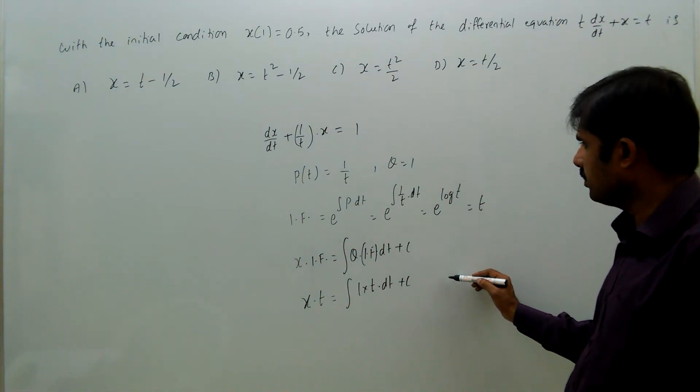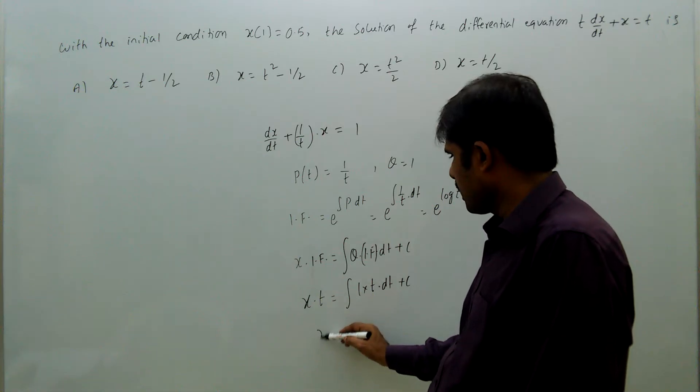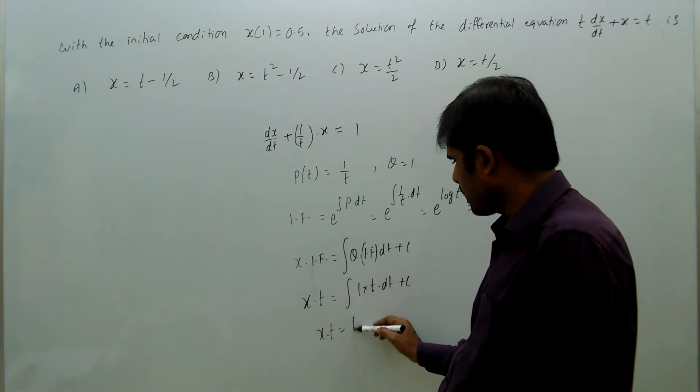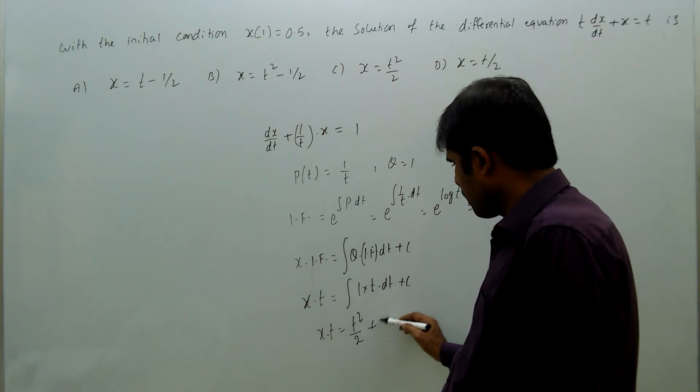Therefore, the equation is x into t equal to t square by 2 plus c.